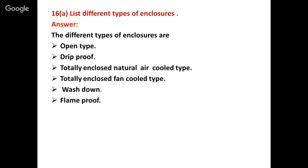Next question: list different types of enclosures — five types, one mark each. The question says 'list' so no explanation is required. Types of motor enclosures: open type, drip-proof type, totally enclosed natural air cooled (TENC) type, totally enclosed fan cooled (TEFC) type, washdown type, and flame-proof type. These are the different outer coverings of a machine.